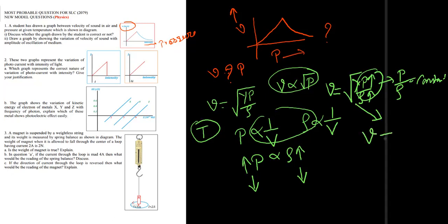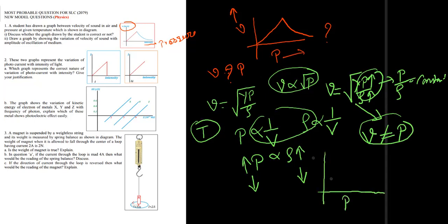Therefore, velocity is independent of pressure — it does not depend upon pressure. If we gradually increase the pressure, the velocity of sound in a given medium remains constant. So the correct form of the graph is that velocity remains uniform as pressure changes — a horizontal straight line.